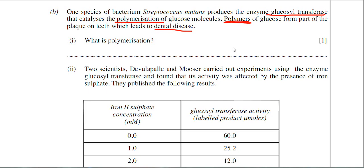For example, starch is a polymer made up of the monomer alpha glucose. Polymerization occurs when monomers are joined together to produce a very large molecule. Another point: polymerization only occurs when the same monomer is being added together — you can't have different monomers to produce a polymer. The answer is: the joining together of monomers to form a larger molecule.